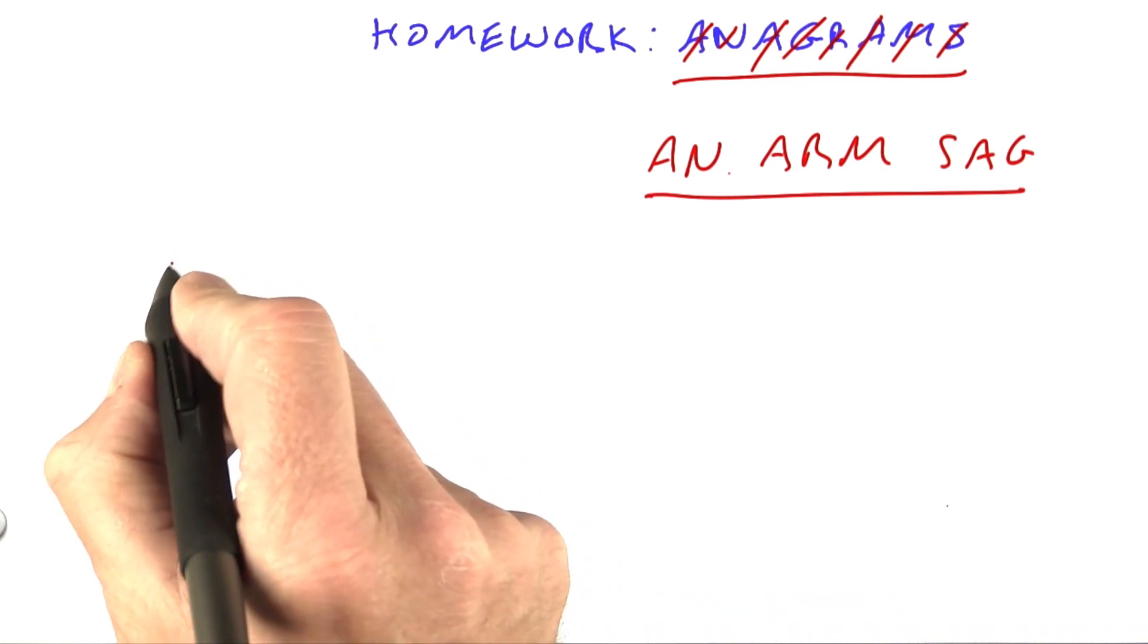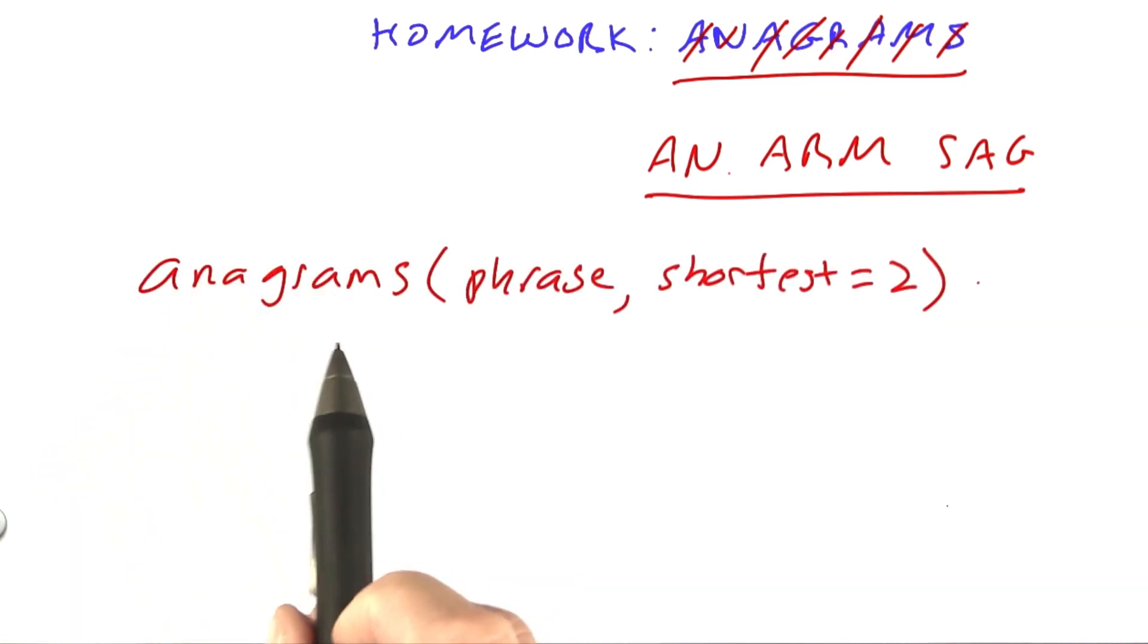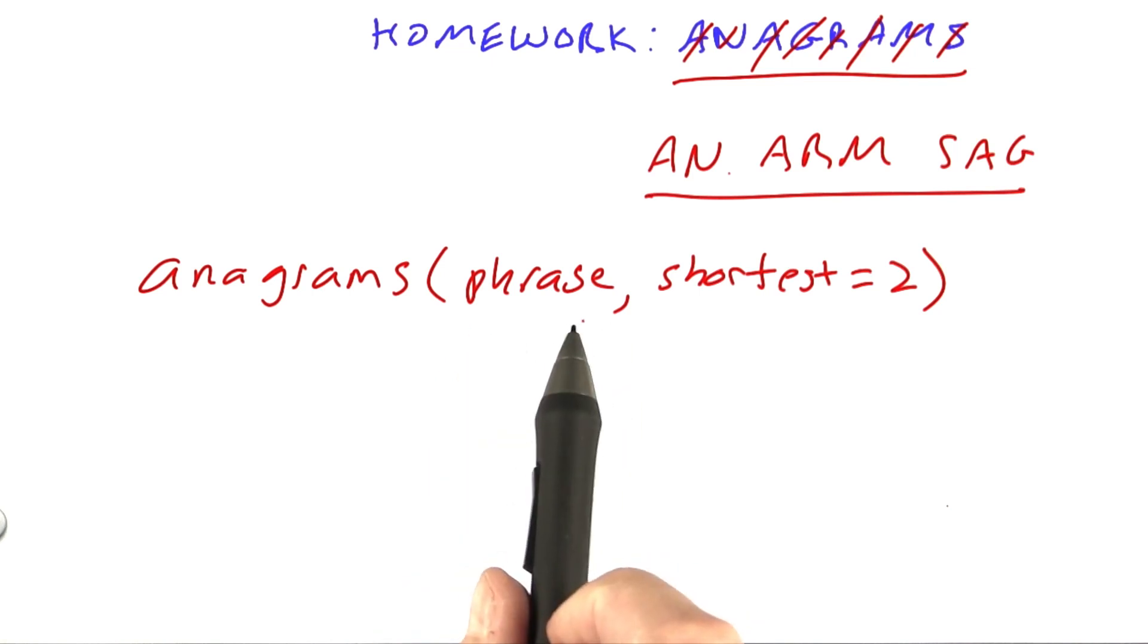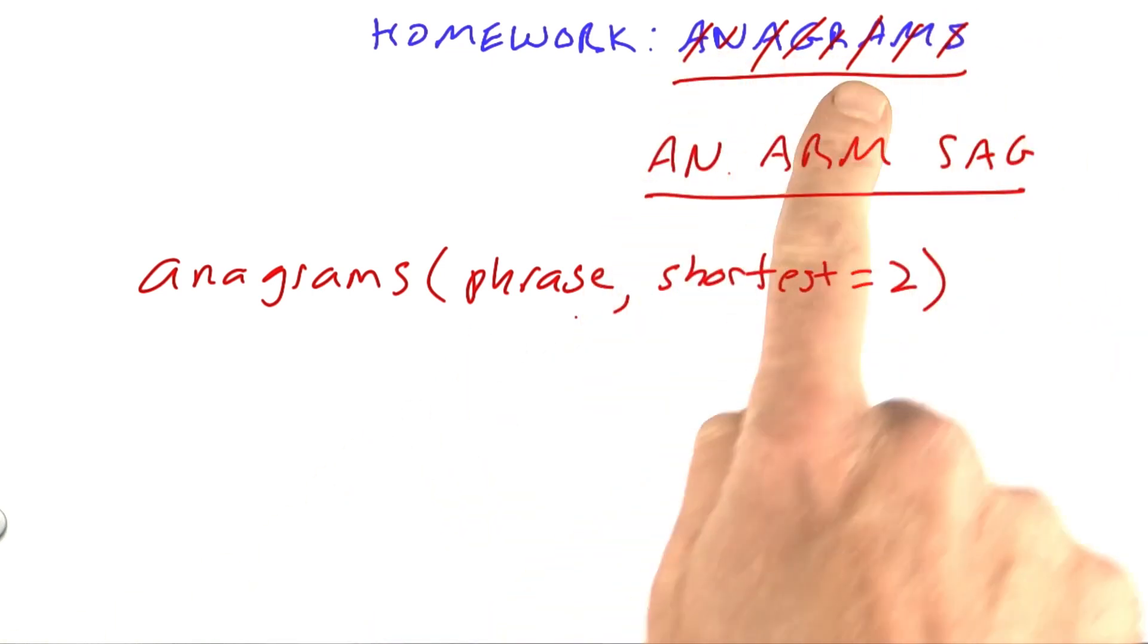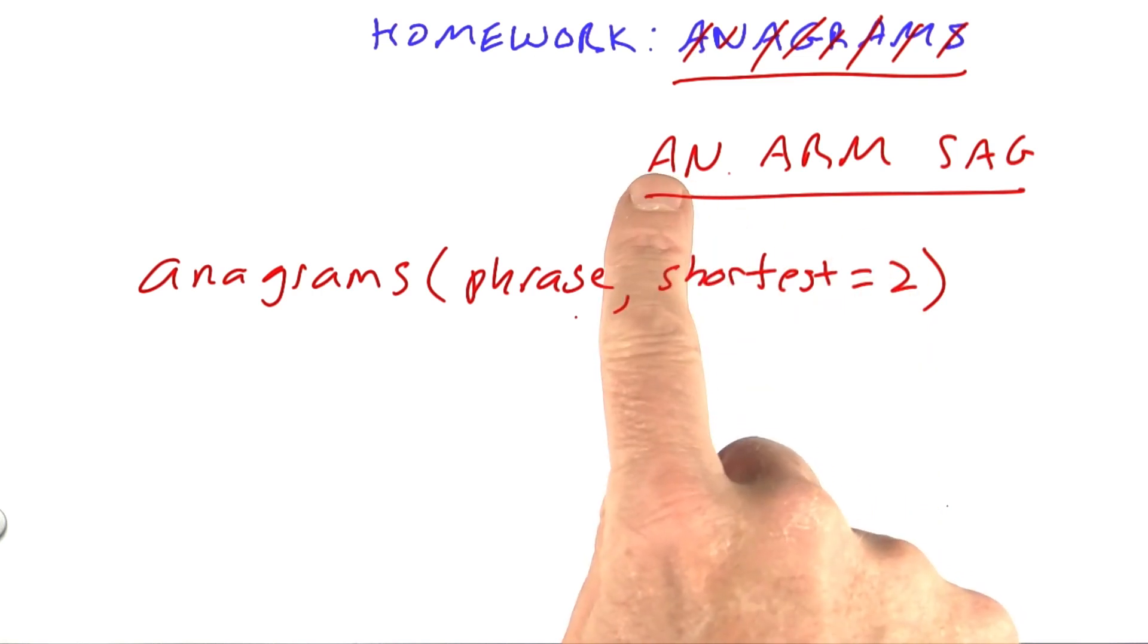Your task is going to be to write the function anagrams, which takes as input a phrase which is a string like 'anagrams' or it could be a string with multiple words separated by spaces. Then an optional argument saying what's the shortest word you're going to accept in the answer. Here we allow two-letter words and up.